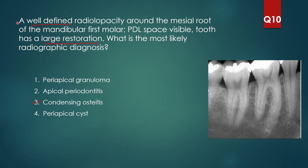A well-defined radiopacity around the mesial root of the mandibular first molar. Out of the four options — granuloma, apical periodontitis, periapical cyst — all are radiolucent, except condensing osteitis. So when they ask about a well-defined radio opacity, the answer is condensing osteitis.